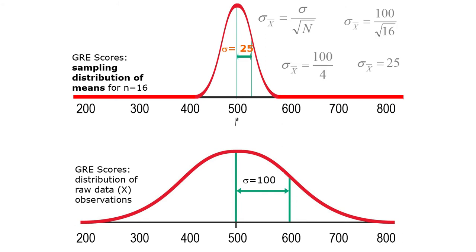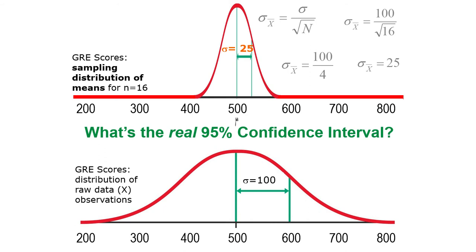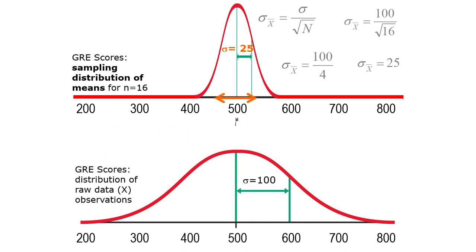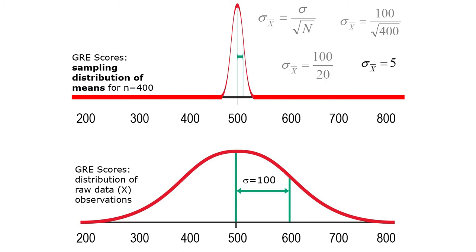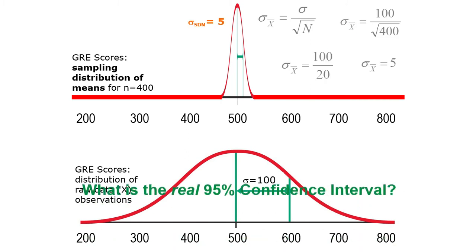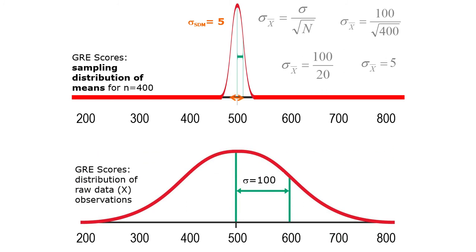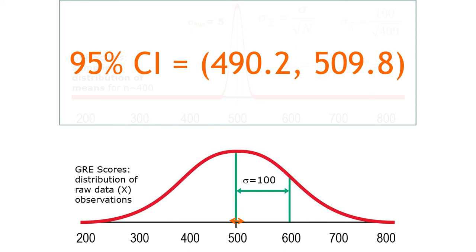When we had sample size of 16 and the standard error was 25, the real 95% confidence interval uses 1.96 standard errors. You calculate 500 minus 1.96 times 25 for the lower bound, and 500 plus 1.96 times 25 for the upper bound. So your 95% confidence interval is 451 to 549. With the huge sample size giving a standard error of only 5, 1.96 times 5 below and above gives a confidence interval of 490.2 to 509.8.